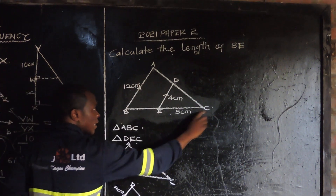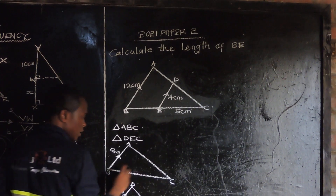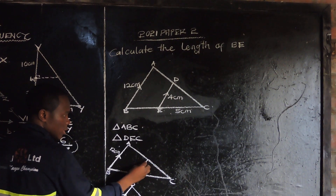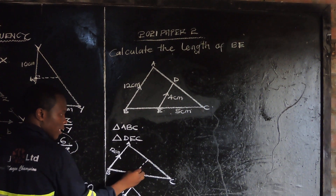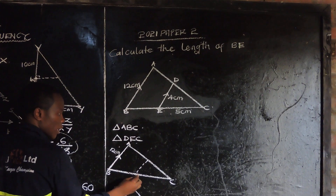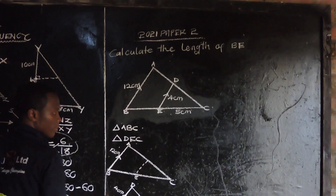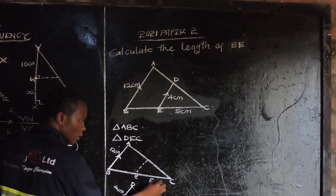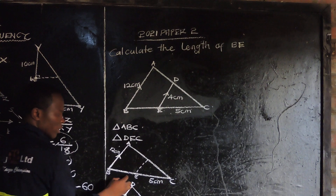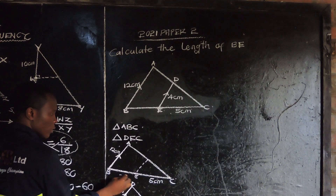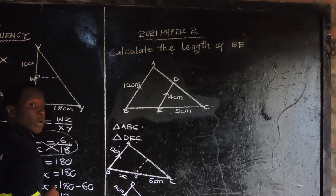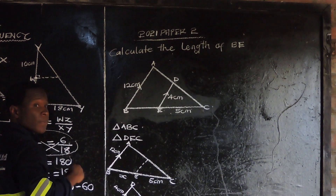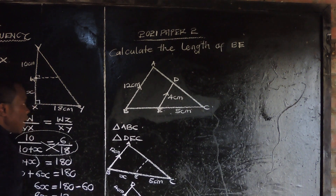Our big triangle has this side, which is AB. And you have something where this is E, and this is 5. So what is this one? It's X. Are we moving together?